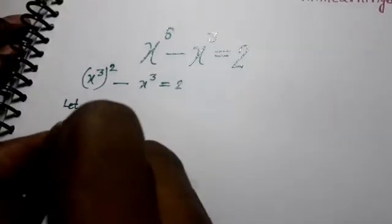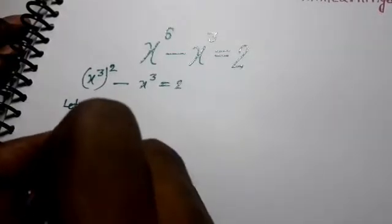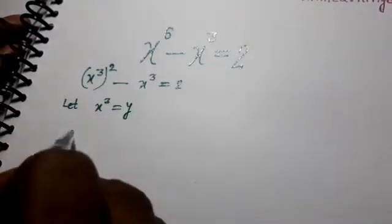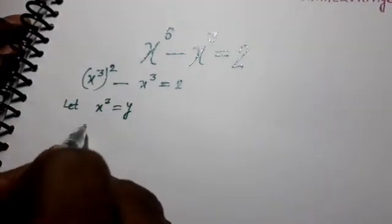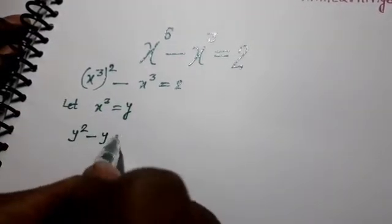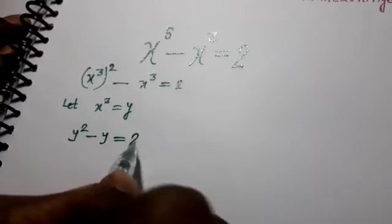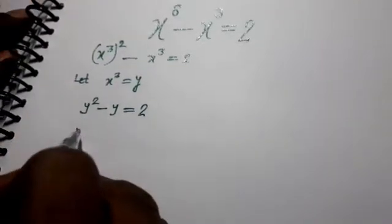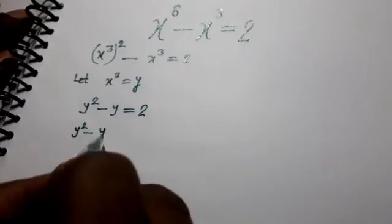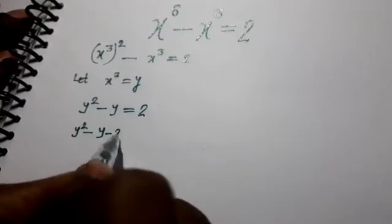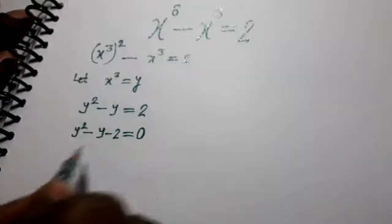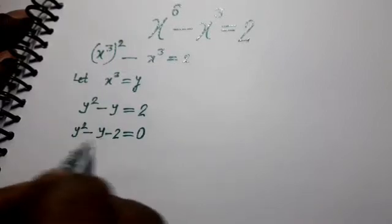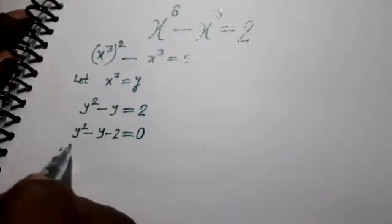Let x cube equal to y. Then it is y squared minus y equal to 2, so it is y squared minus y minus 2 equal to 0. Now we have to factorize it.